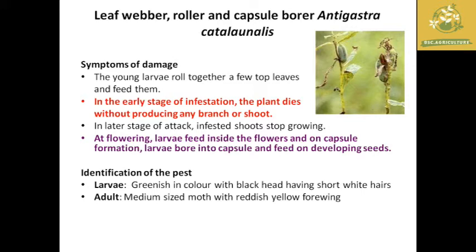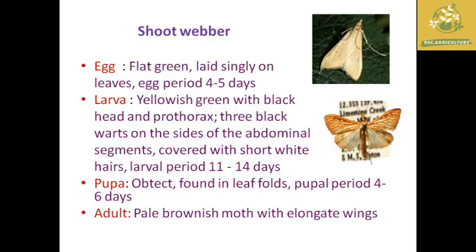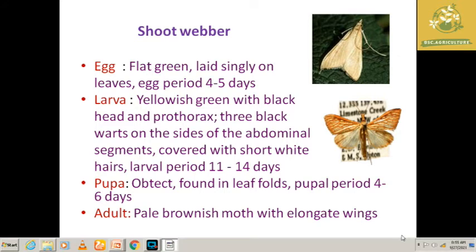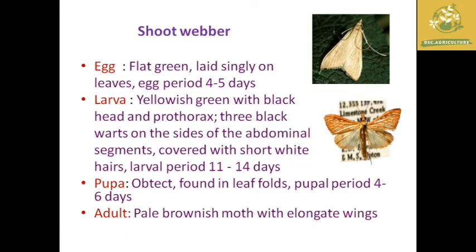For identification of the leaf webber and capsule borer: the larvae are greenish in color with a black head having short white hairs. The adult is a medium-sized moth with reddish-white to yellow forewings. The next pest is the shoot webber.